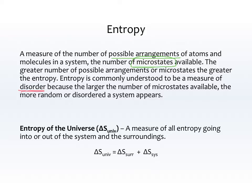We're going to talk about several different types of entropy. First, the entropy of the universe. You will recall from the second law of thermodynamics that the entropy of the universe is always increasing. And the third law of thermodynamics states that the entropy of a perfect crystal at zero K is zero. In other words, everything has entropy. For spontaneous reactions, the universe increases in entropy.